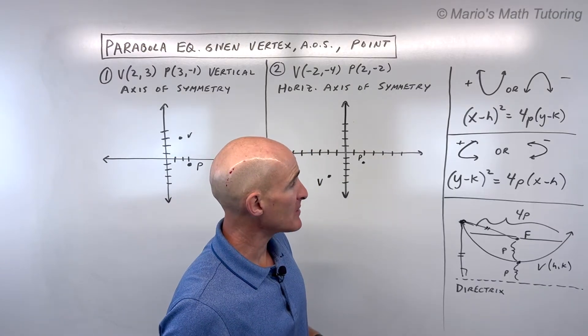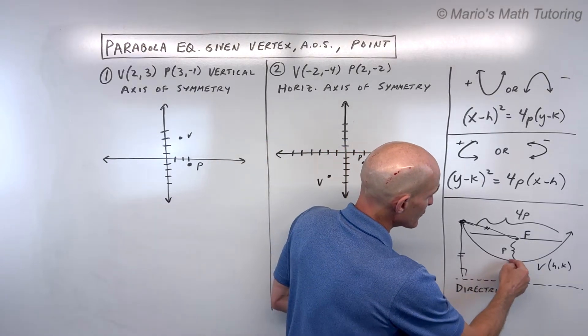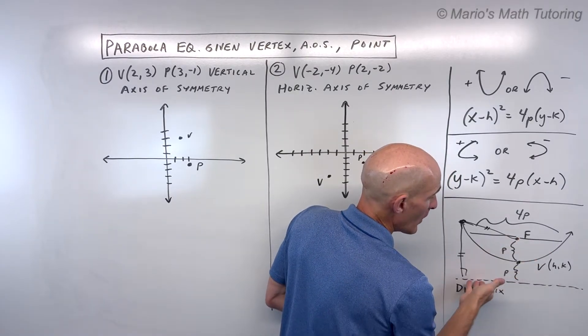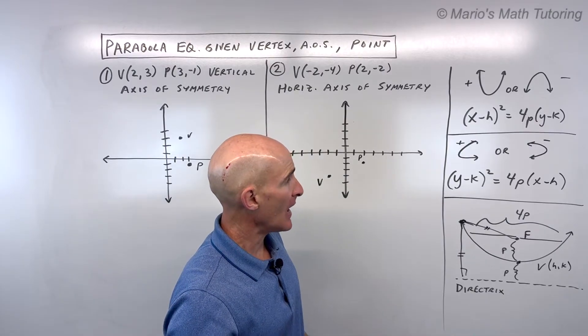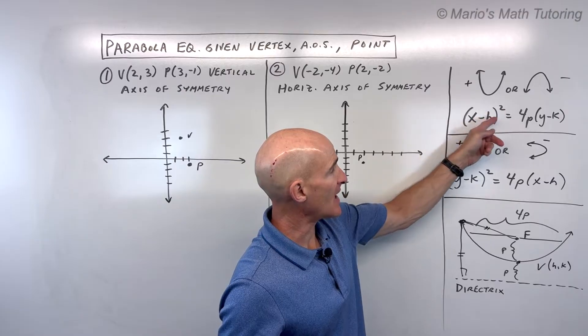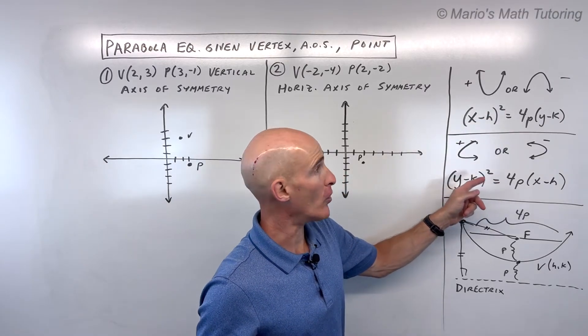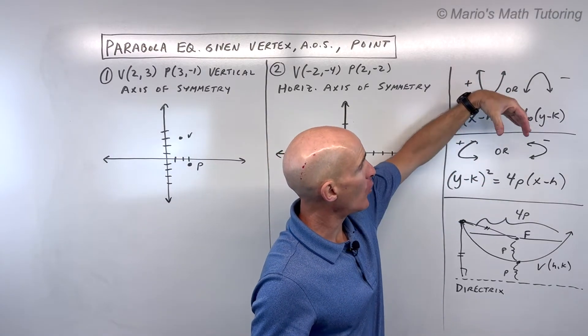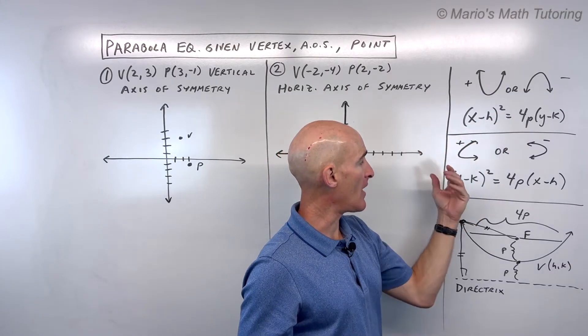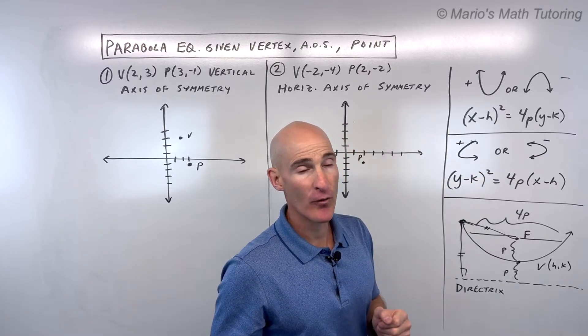And so what happens is the parabola where it bends here, this is called the vertex, it's going to open towards the focus away from this directrix, this line. And the parabola can be written in one of two forms here, either like in this x squared form or the y squared form. So if the parabola opens up or down, it's going to be in this form where the x is squared. If it opens to the right or the left, it's going to be in this y squared form.